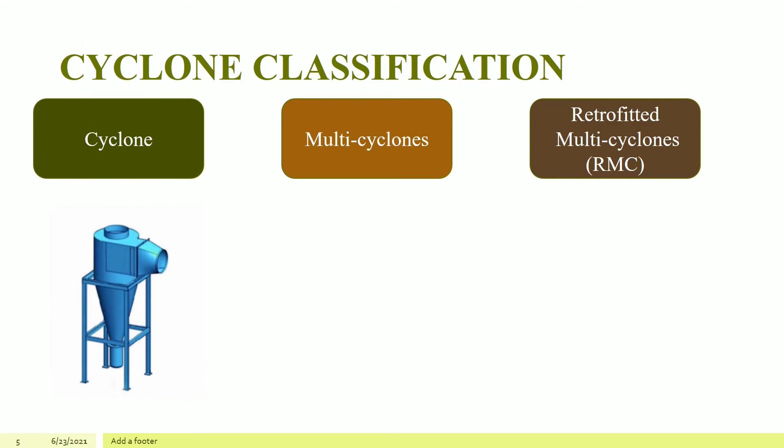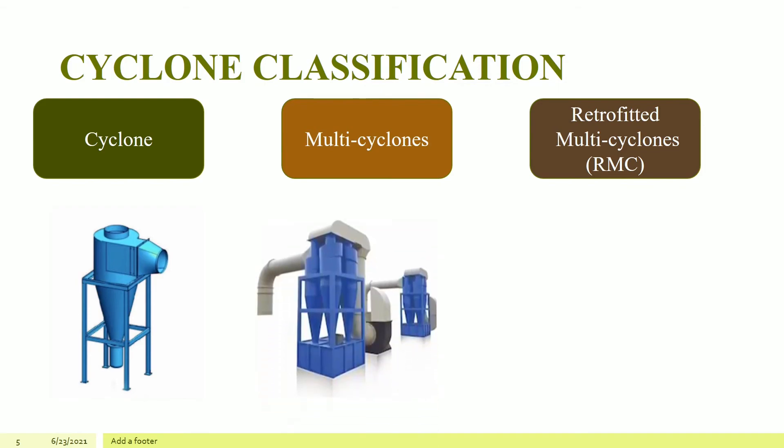What is a cyclone? Cyclone separators are separation devices that use the principle of inertia to remove particles of particulate matter from flue gases. Cyclone separators are one of many air pollution control devices known as pre-cleaners, since they generally remove larger pieces of particulate matter. In addition, several cyclone separators can operate in parallel, and this system is known as a multi-cyclone.